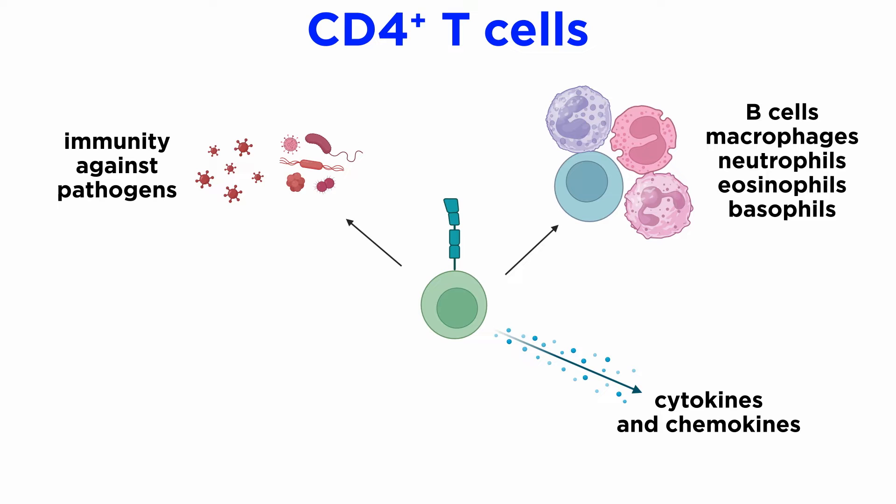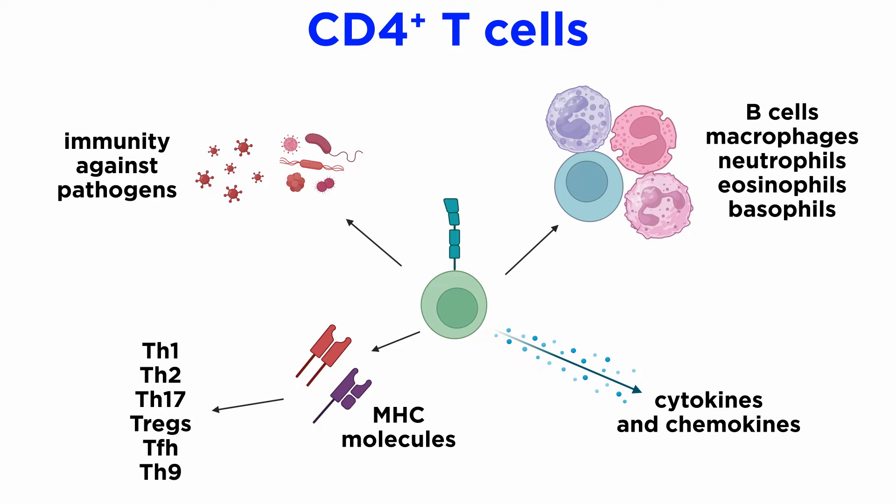They also produce a variety of cytokines and chemokines that regulate various downstream immune responses, including immune suppression. Naive CD4-plus T-cells are activated once they interact with the antigen MHC complex, after which they differentiate into specific subtypes depending mainly on the cytokine milieu of the existing microenvironment.